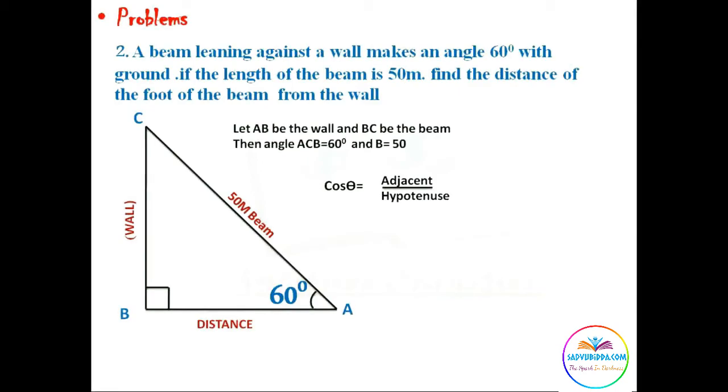Remember that we are not considering here tan theta because we have to find adjacent side. If we consider tan theta, we don't know opposite side, so it is better to consider cos theta. As we know, cos theta equals adjacent side by hypotenuse side, which is BA by AC.